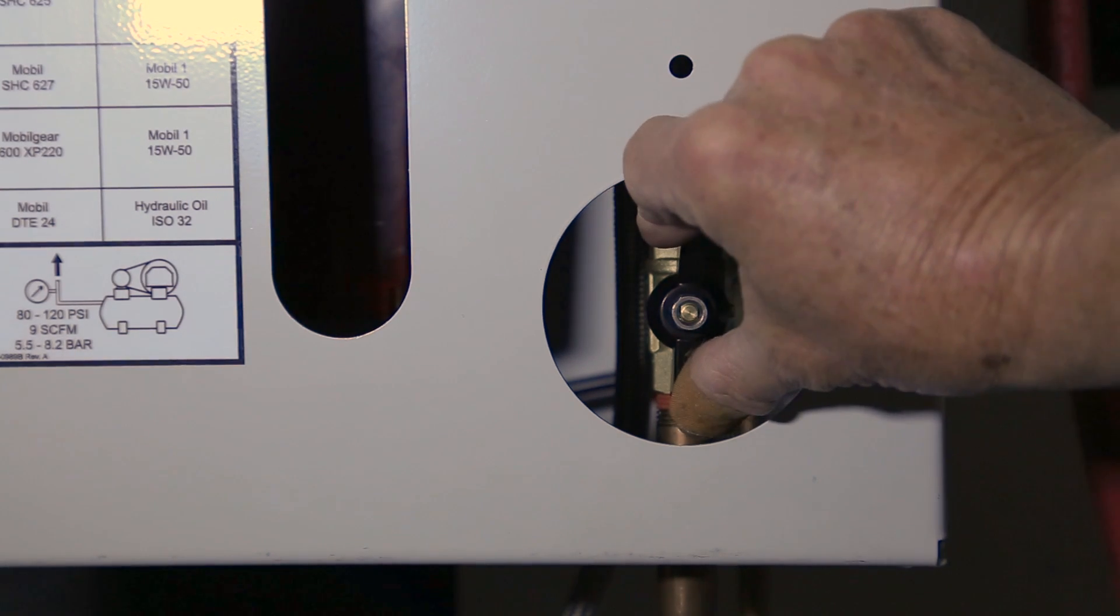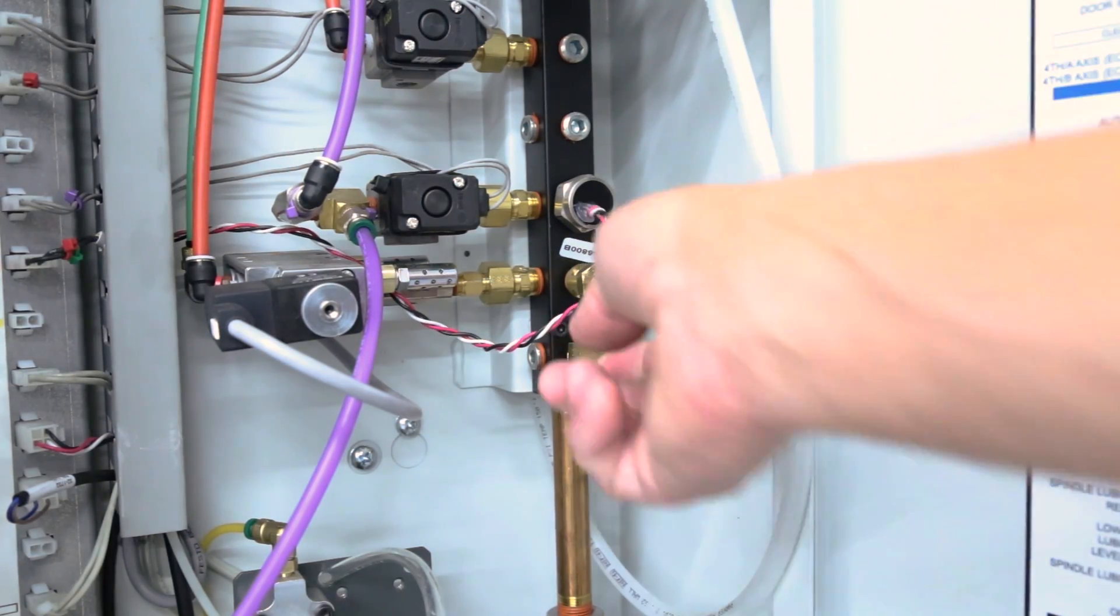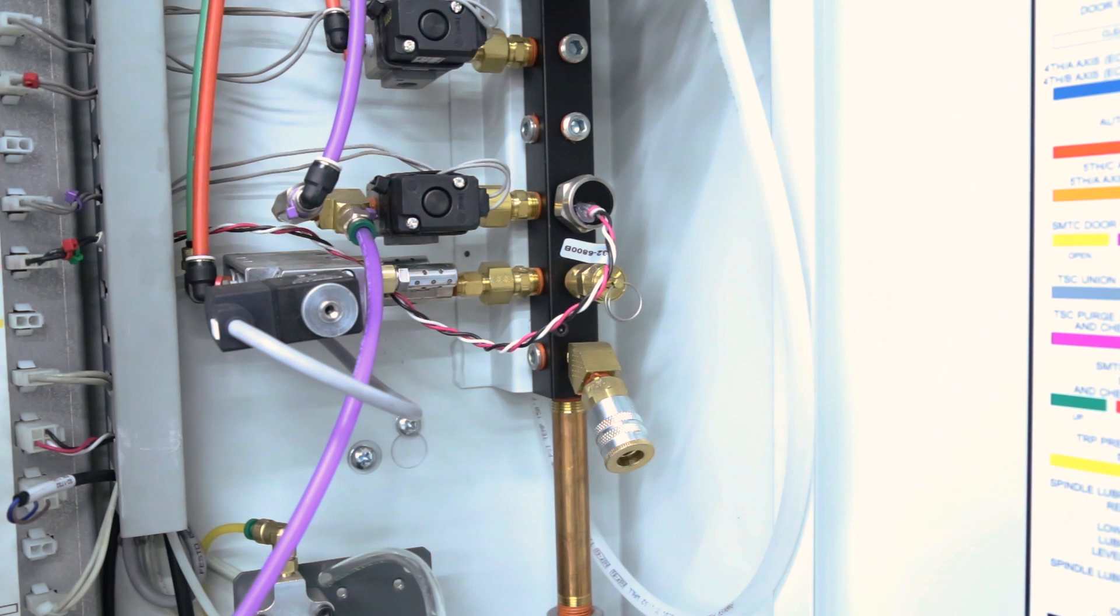First, turn off the air supply at the air lube cabinet. Pull the ring on the air release valve to completely evacuate all of the air from the machine.